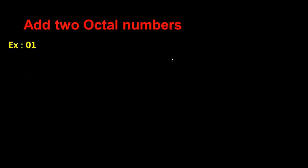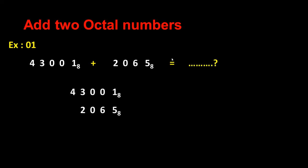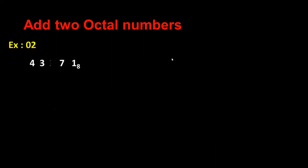Now we do octal addition. Let's see how to do octal addition. I have 4 3 0 0 1 plus 2 0 6 5. What is the answer? So 1 plus 5 answer is 6, 0 plus 6 answer is 6, 0 plus 0 answer is 0, 3 plus 2 answer is 5, and then 4. So this is my octal answer: 4 5 0 6 6.